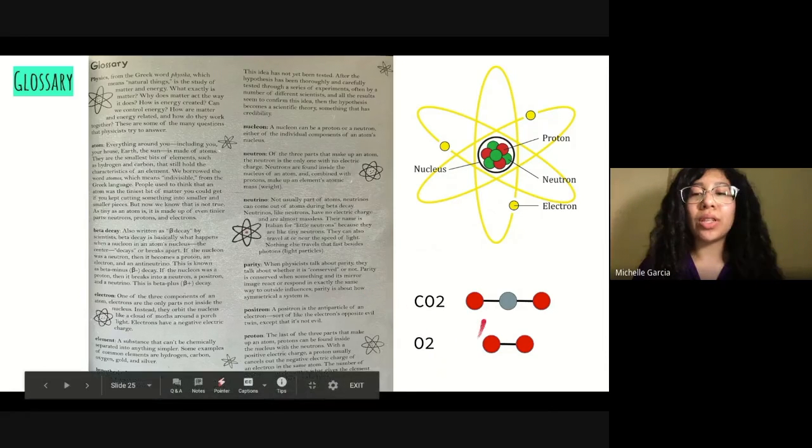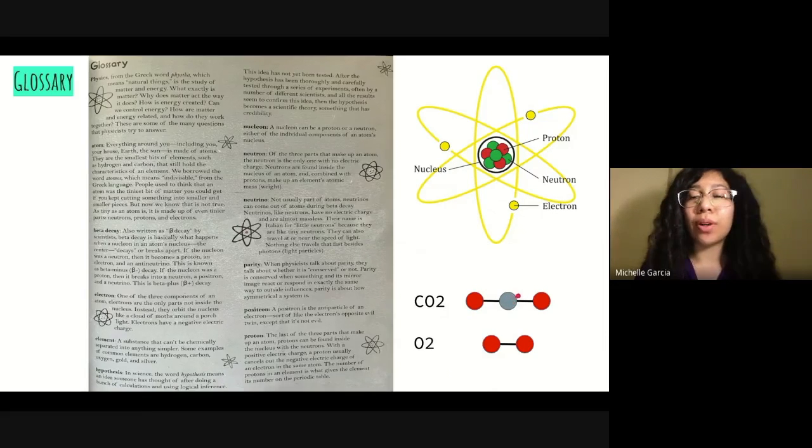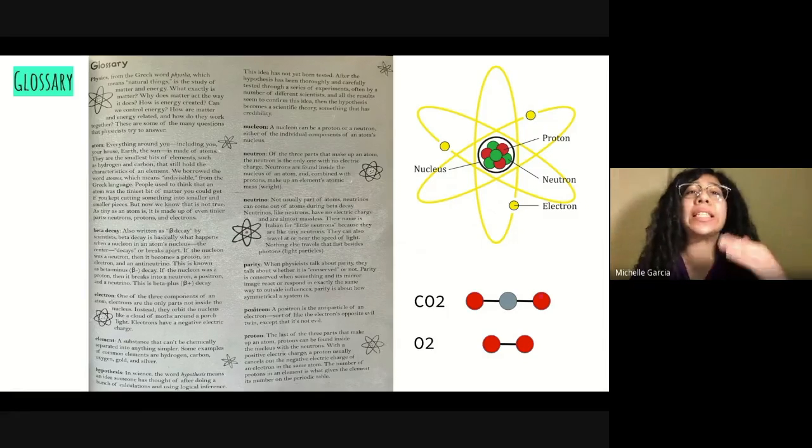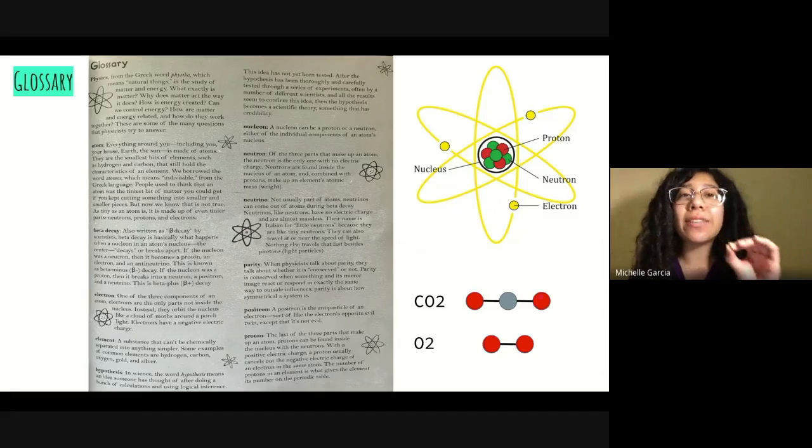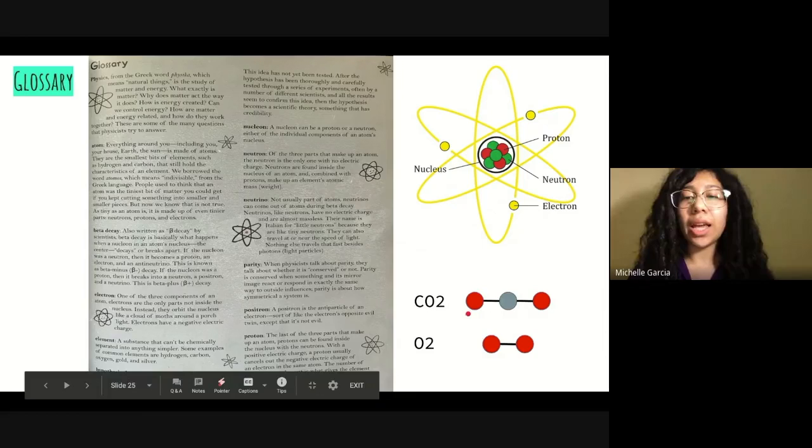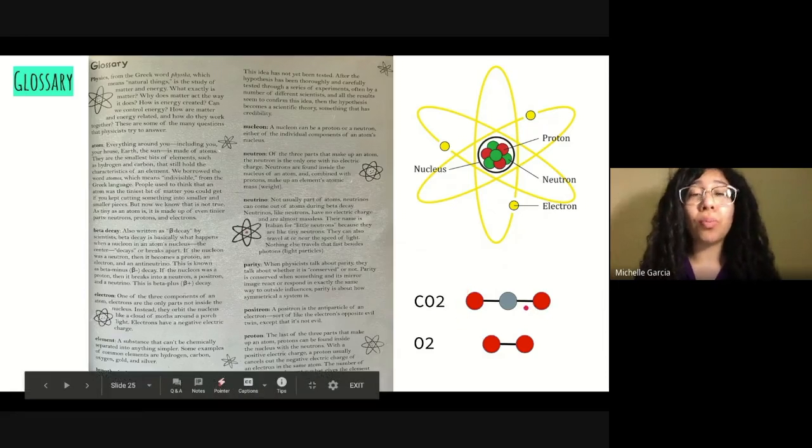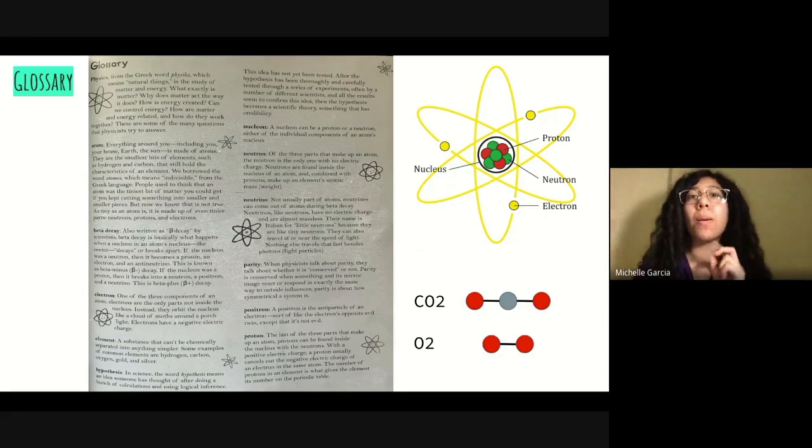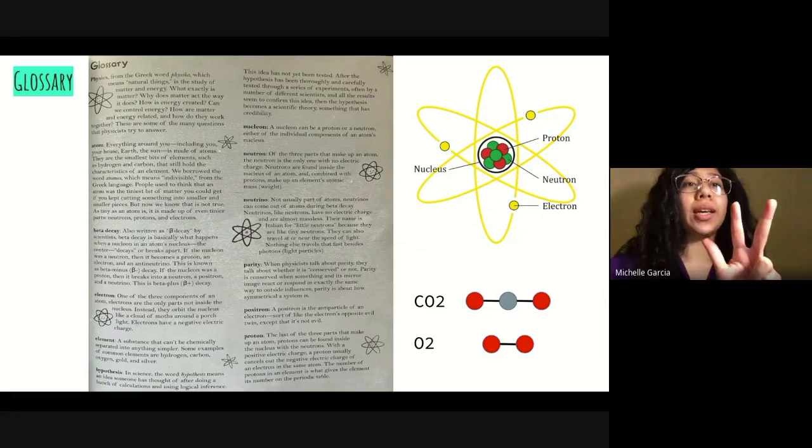So you see here this red atom is bonded to this gray atom, and this gray atom is bonded to this red atom. Each different colored atom represent a specific type of atom, and each type of atom corresponds to an element. So this red atom represents oxygen, and this gray atom represents carbon. This molecule or group of atoms bonded together is made up of two elements, but it is made up of three atoms.